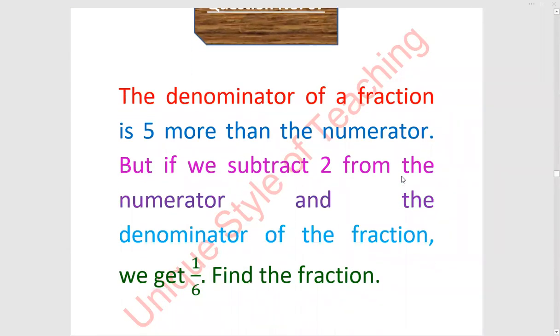The denominator of a fraction is 5 more than the numerator, but if we subtract 2 from the numerator and the denominator of the fraction, we get 1 upon 6. Find the fraction.